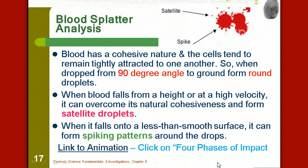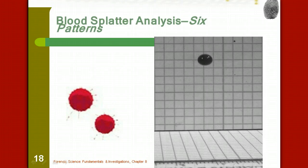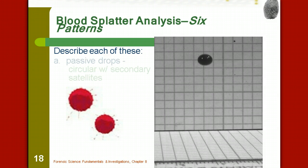When we study those splatter patterns, there are six basic patterns that we can observe. We're going to describe each of these. The first type are called passive drops, and these are going to be circular droplets with secondary satellites. Typically, not a lot of movement. Blood is just dripping off of a source, and it hits the ground.